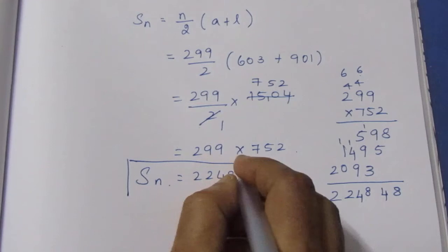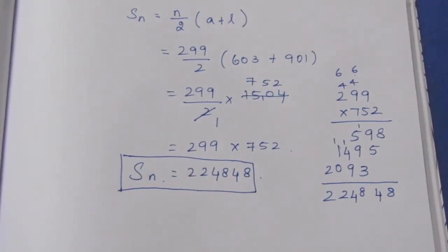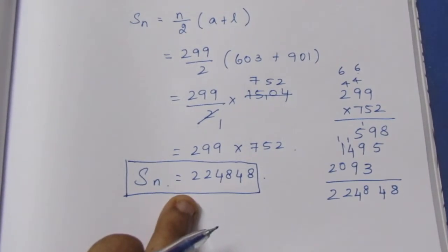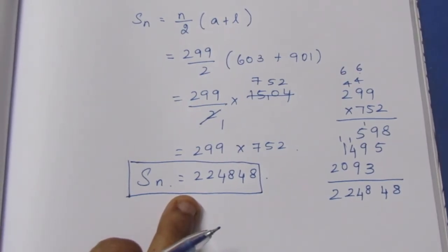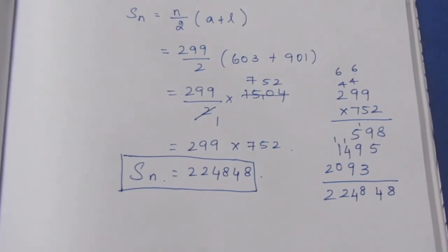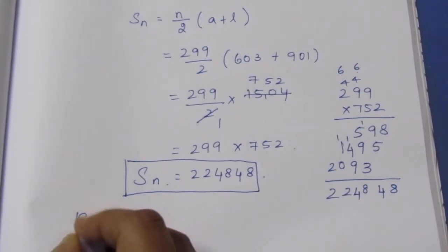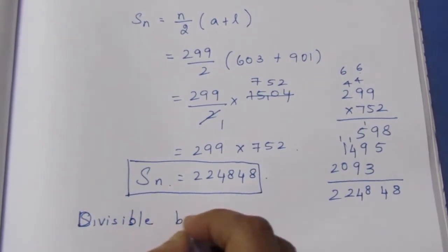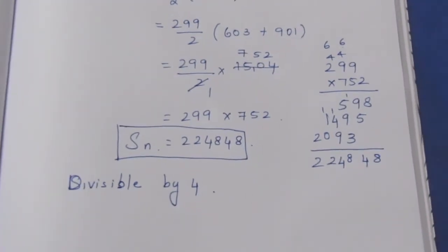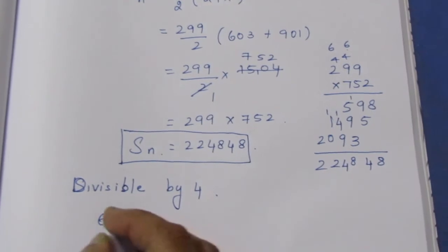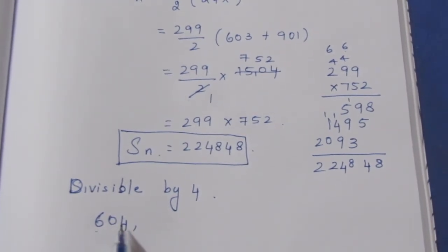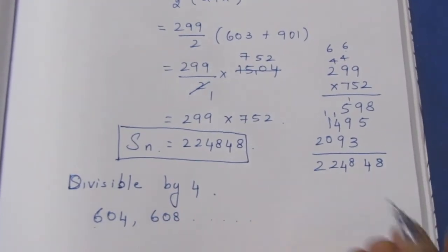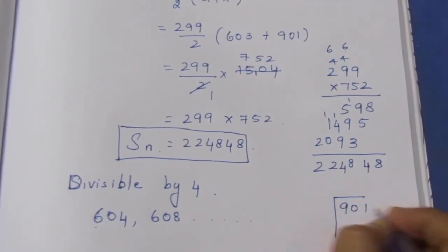We have now found the full sum from 603 to 901. But the question asks for numbers NOT divisible by 4, so we need to find the sum of all numbers divisible by 4 in this range and subtract it. The first number divisible by 4 is 604, and we need to find the last one, starting from 604, 608, ... up to near 901.